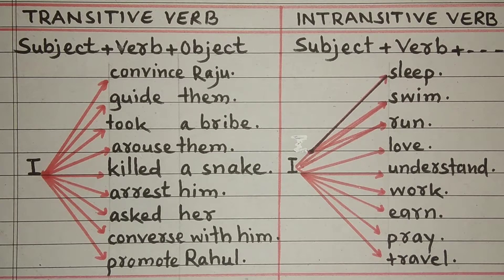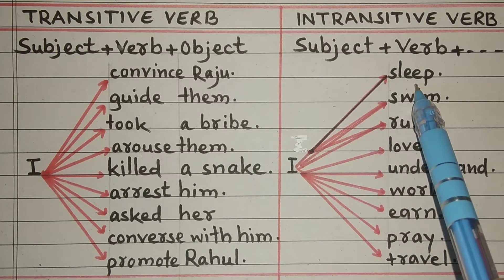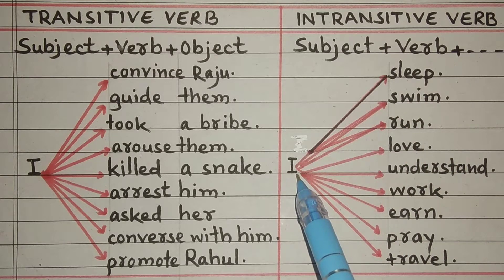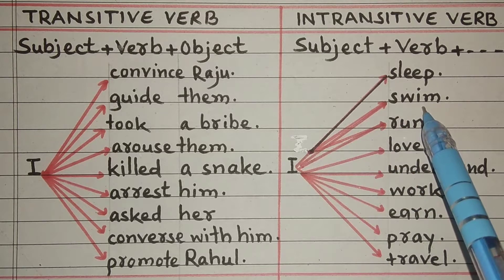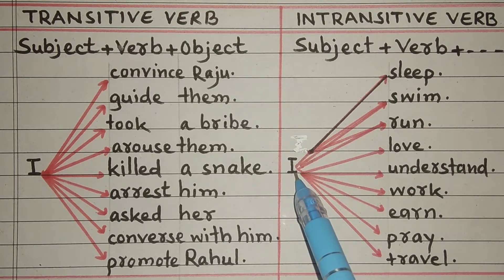Ab intransitive verb dekhein — formula: Subject plus Verb. Kon? May. Kya karta hai? Sota hai — Sleep. May sota hoon — I sleep. Kya karta hai? Tairta hai — Swim. Tairta hai — complete meaning ho gaya. Kon? I. Kya karta hai? Daudta hai — Run. Kon? I. Kya karta hai? Mohabbat karta hai, ulfat karta hai — Love. I love.